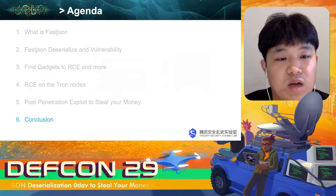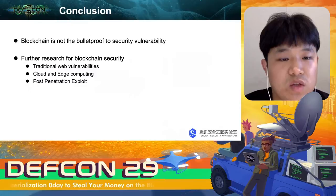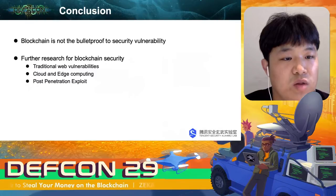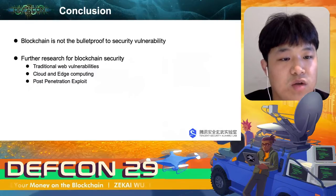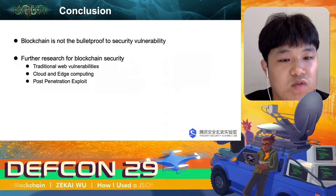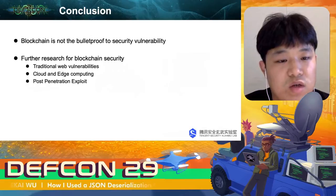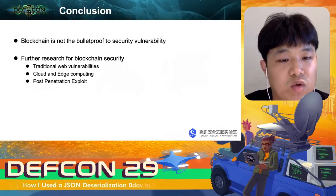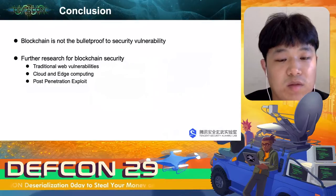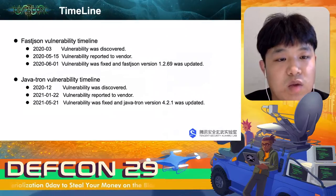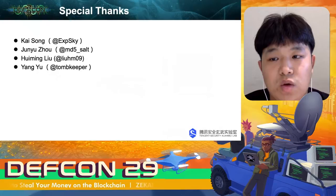In conclusion, although distributed and decentralized structure improves the credibility and fault tolerance of the system, blockchain is not bulletproof against security vulnerabilities. We hope our work can notify blockchain developers and users to be more careful about security. Our future research on blockchain security will include traditional web security, code and edge computing, and post-exploitation. Here is the vulnerability disclosure timeline. Special thanks to Song Kai, Zhou Junyu, Liu Huiming, and Yu Yang.